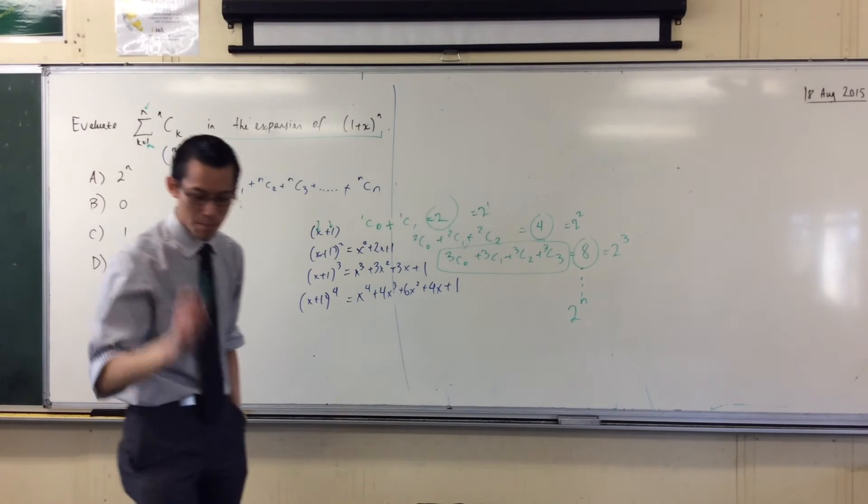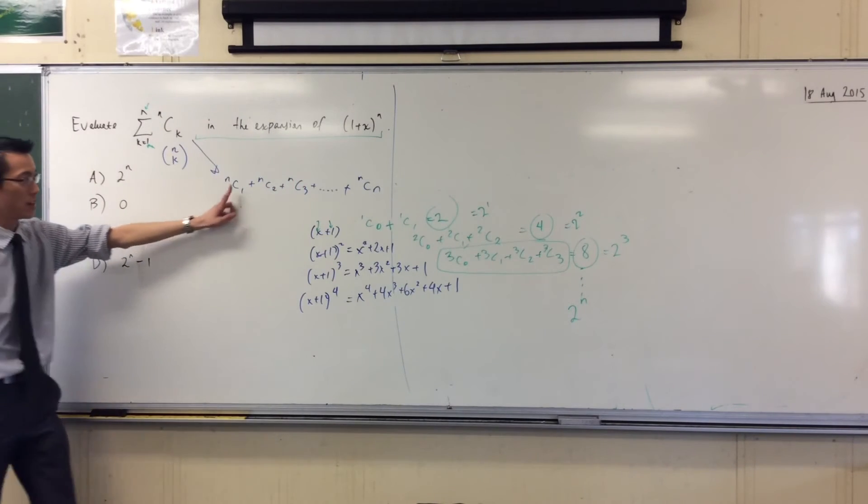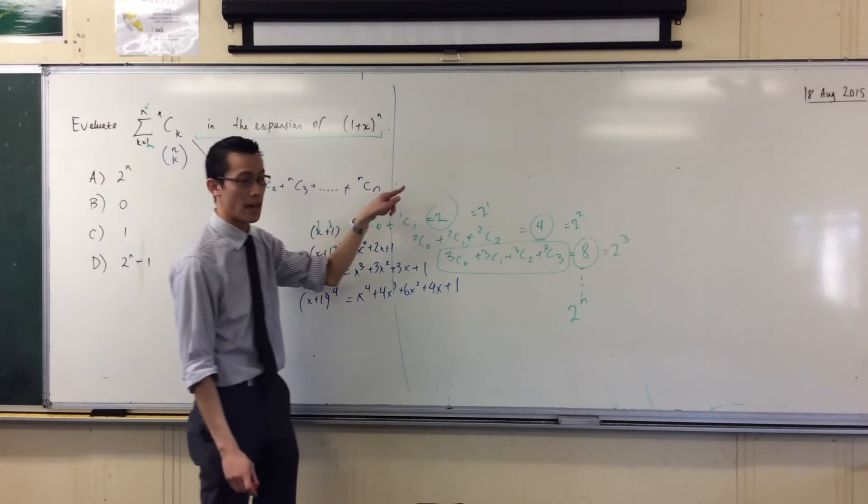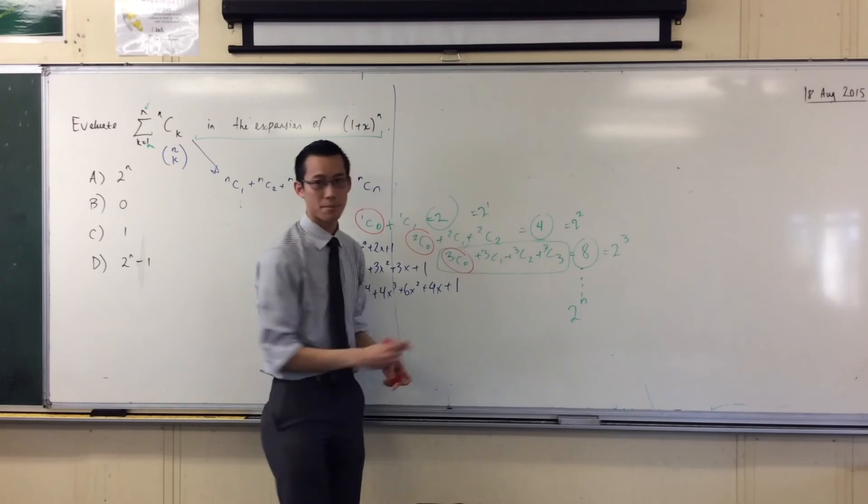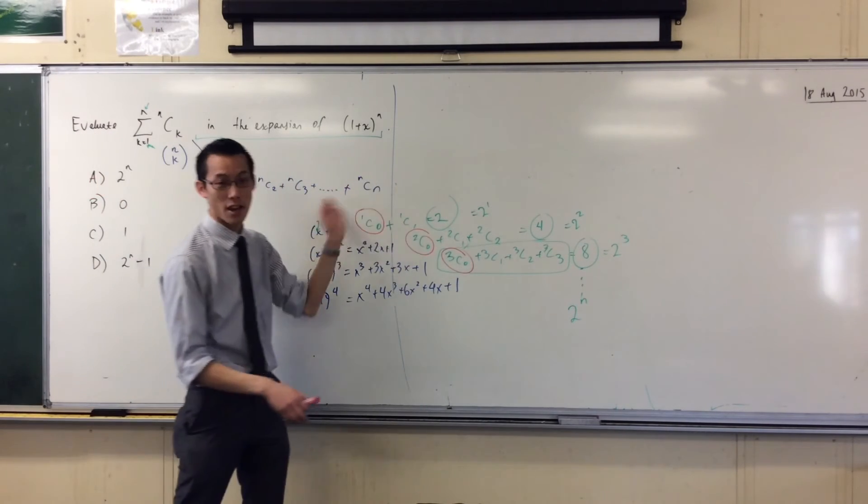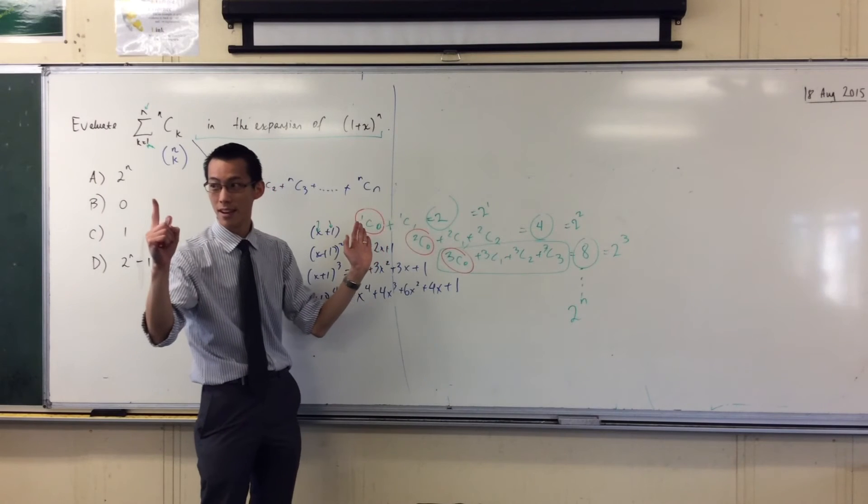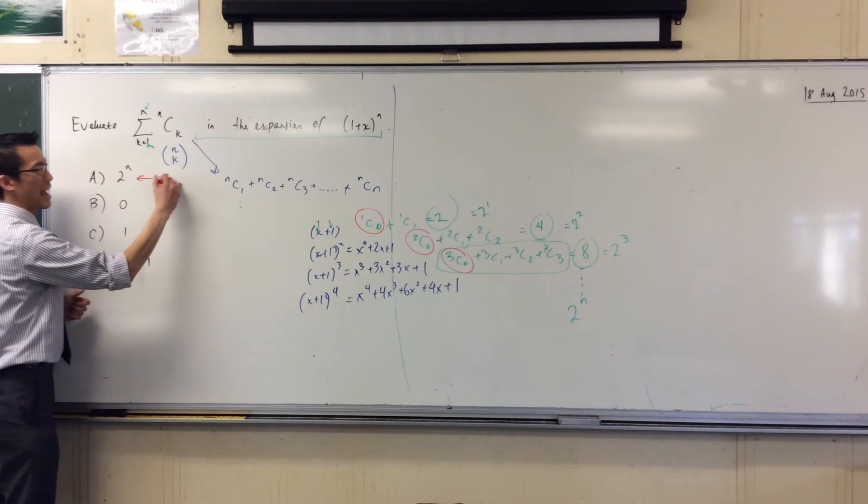And the answer is, it's missing one. Look, I wrote it out here, right? nc1, nc2, nc3, nc4, all the way up to ncn. I'm missing nc0 every time. Now of course, the first term in each row is always one, right? So therefore I'm not, 2 to the n, we call this a distractor.